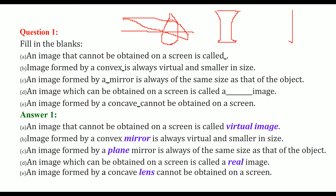An image that cannot be obtained on a screen is called a virtual image. The image formed by a convex mirror is always virtual and smaller in size. An image formed by a plane mirror is the same size as the object — the plane mirror gives an image equal to the object. An image which can be obtained on a screen is called a real image. An image formed by a concave lens cannot be obtained on a screen.